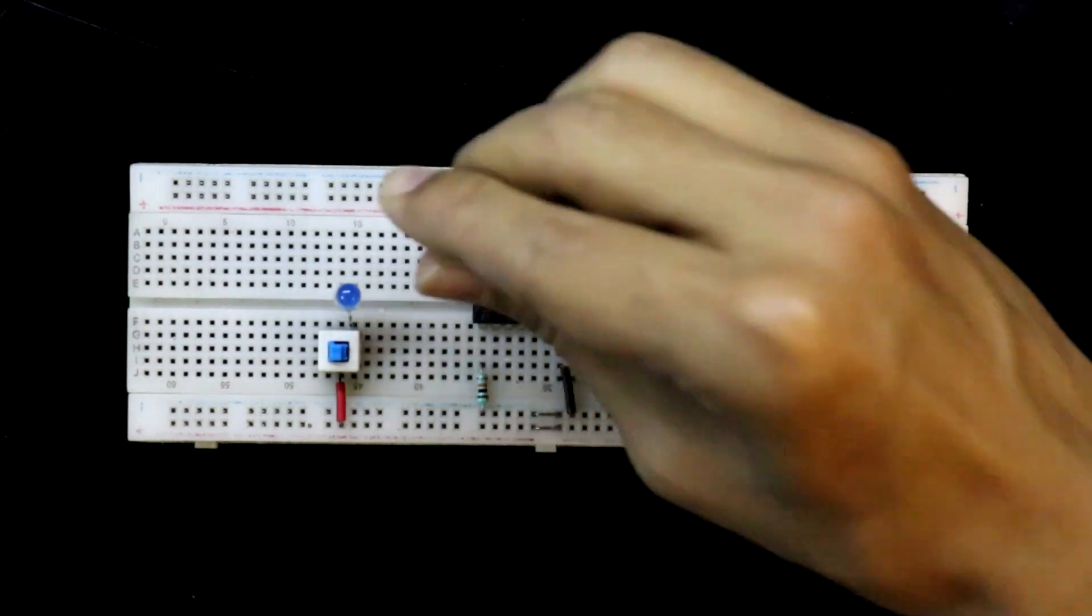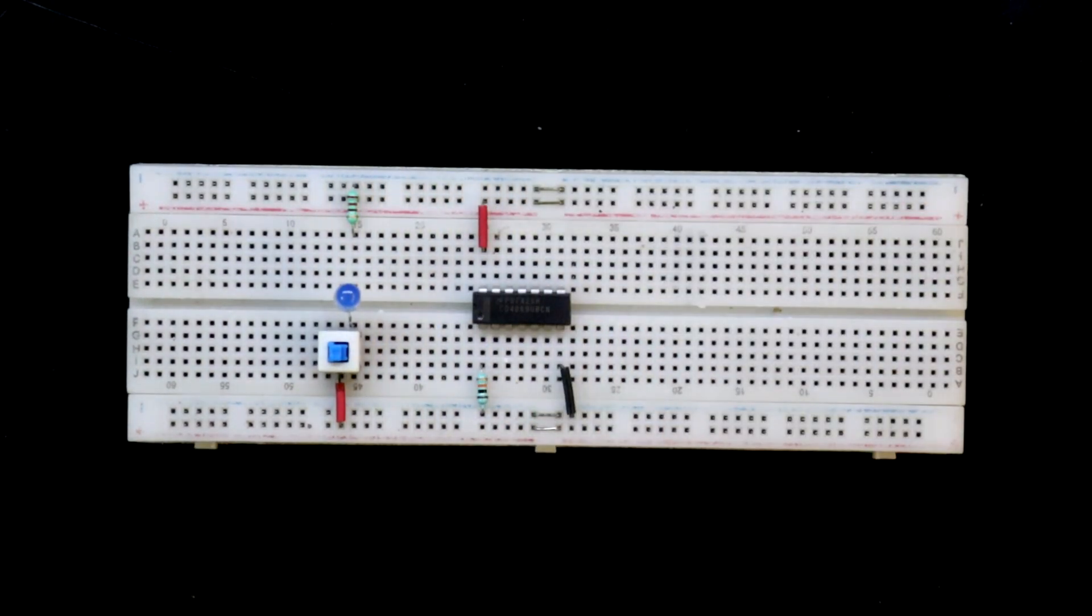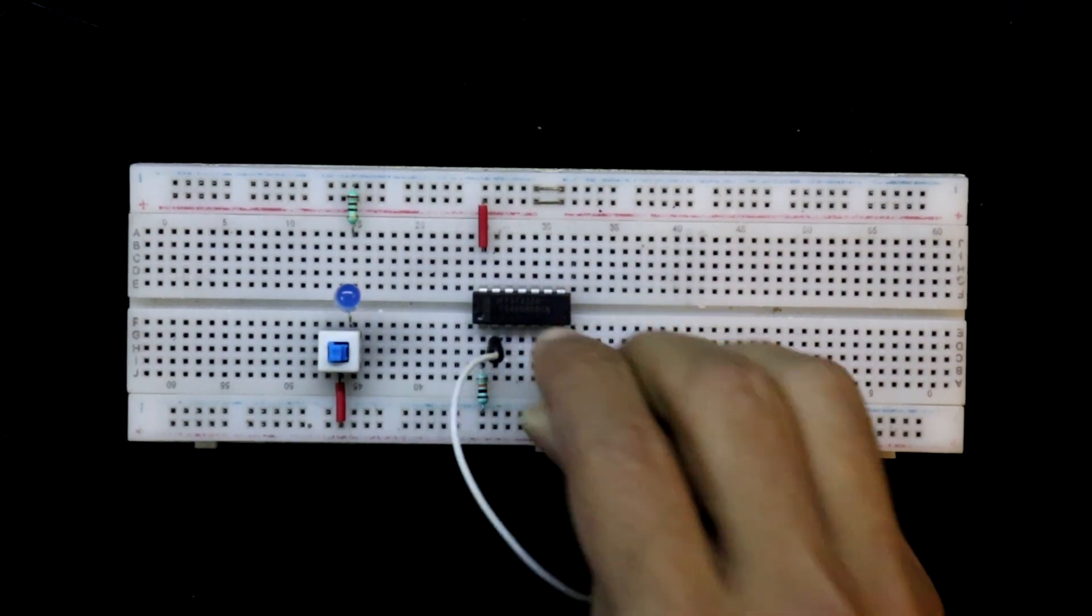To see the input, we are connecting the LED and the series resistor for the LED. And to see the output, we have to connect an LED.